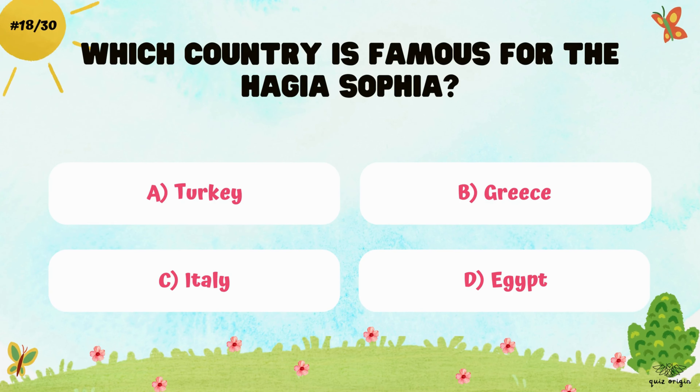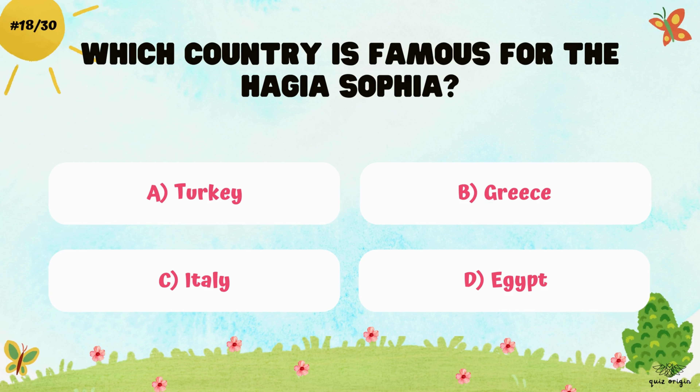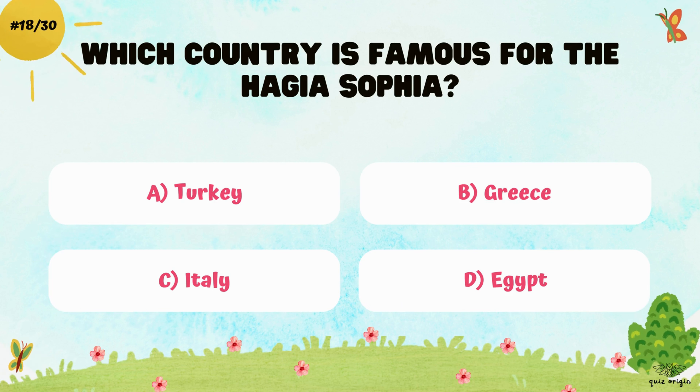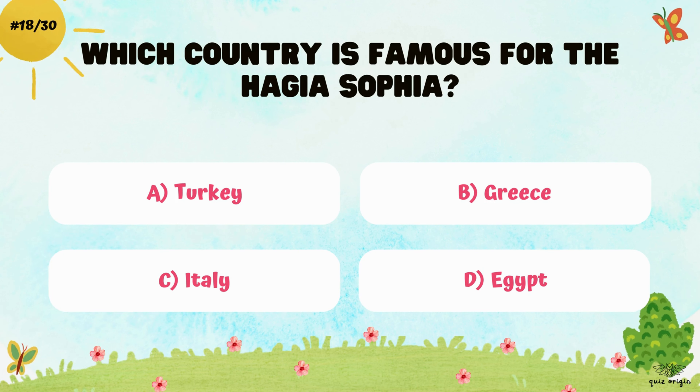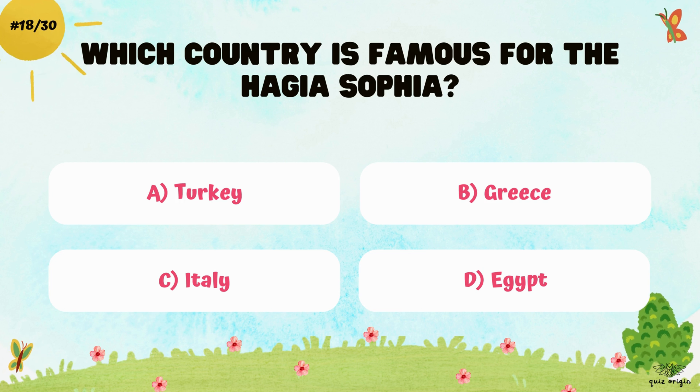Which country is famous for the Hagia Sophia? A. Turkey, B. Greece, C. Italy, and D. Egypt.